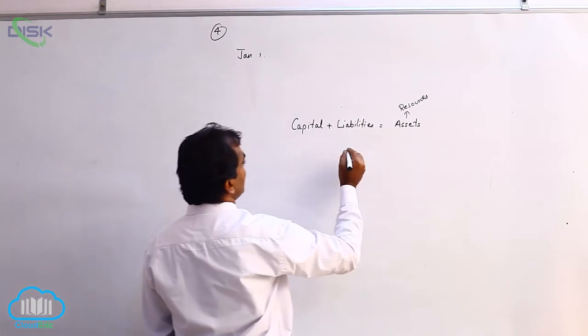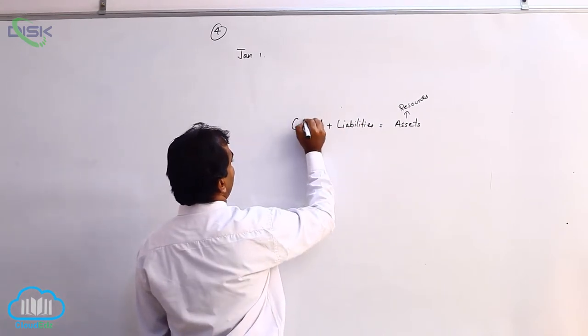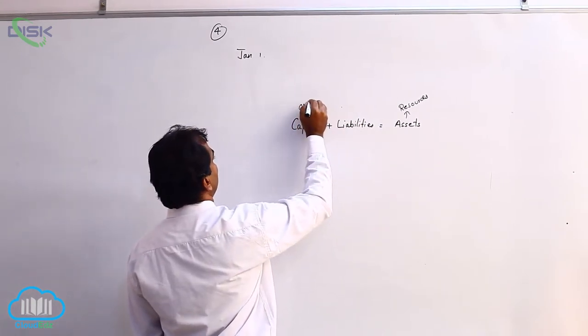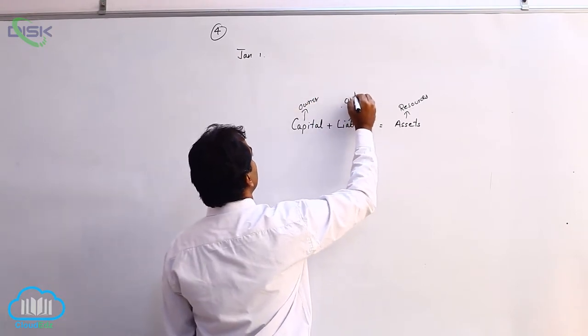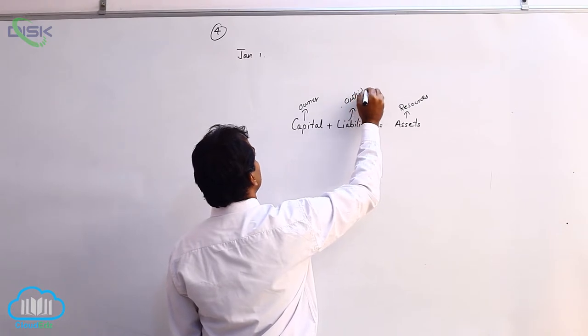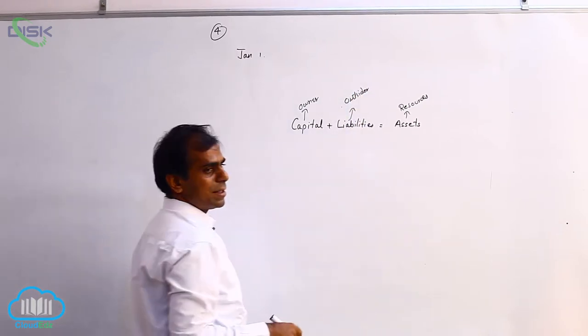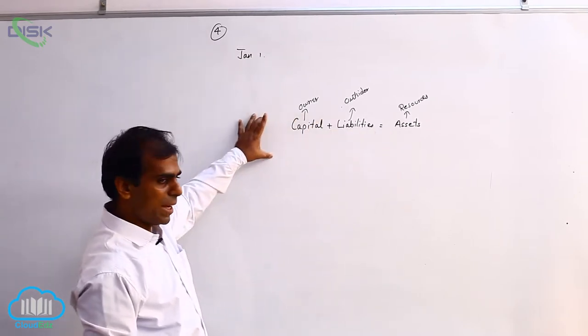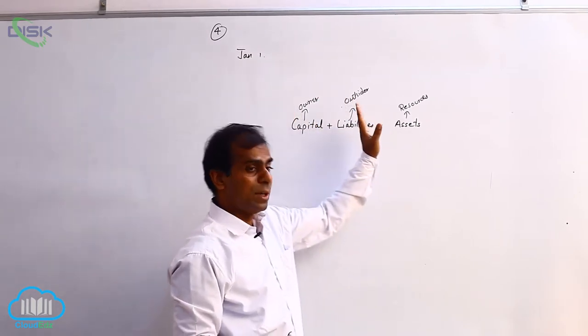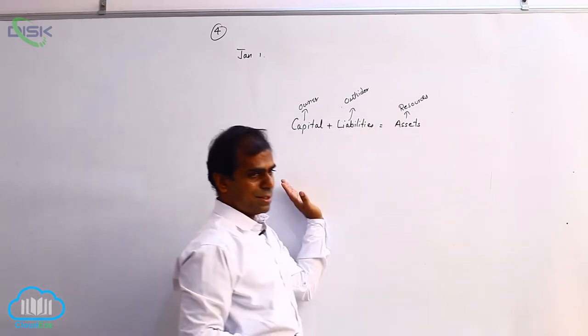Now these resources are either supplied by owner or if owner takes help of outsiders we call them as liabilities. So in a business you can have your resources supplied only by owner or only you borrow from outside or a combination.